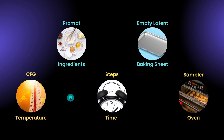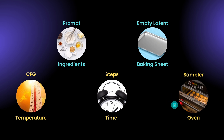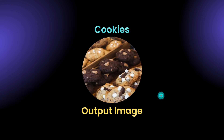We have CFG, which I correlate with temperature. Steps — the amount of time it will take to bake these cookies. And the sampler, which we can correlate to the type of oven we're going to use. As you know, there could be different types of ovens to bake your cookies. Once we have all those things, the end result is some scrumptious cookies, or in our case, an output image.